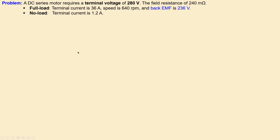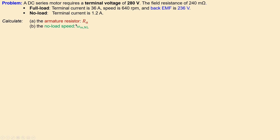We have a DC series motor that requires a terminal voltage of 280 volts. The field resistance is 240 milli-ohms. For full load, we know the terminal current is 36 amperes, the speed is 640 rpm, and the back EMF is 236 volts. For the no-load condition, we only know the current which is 1.2 amperes. What we want to calculate is the armature resistance and also the no-load speed.